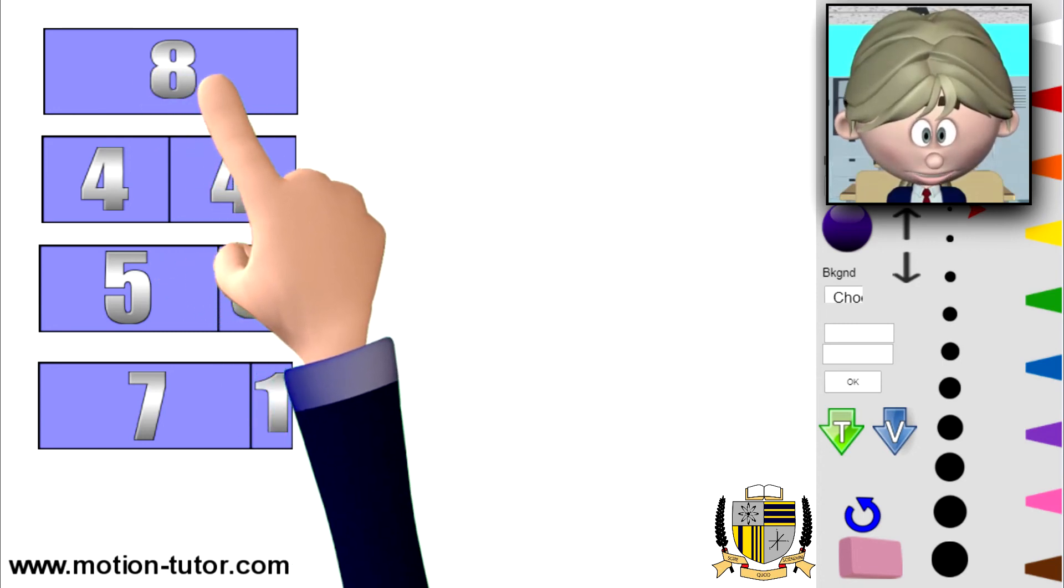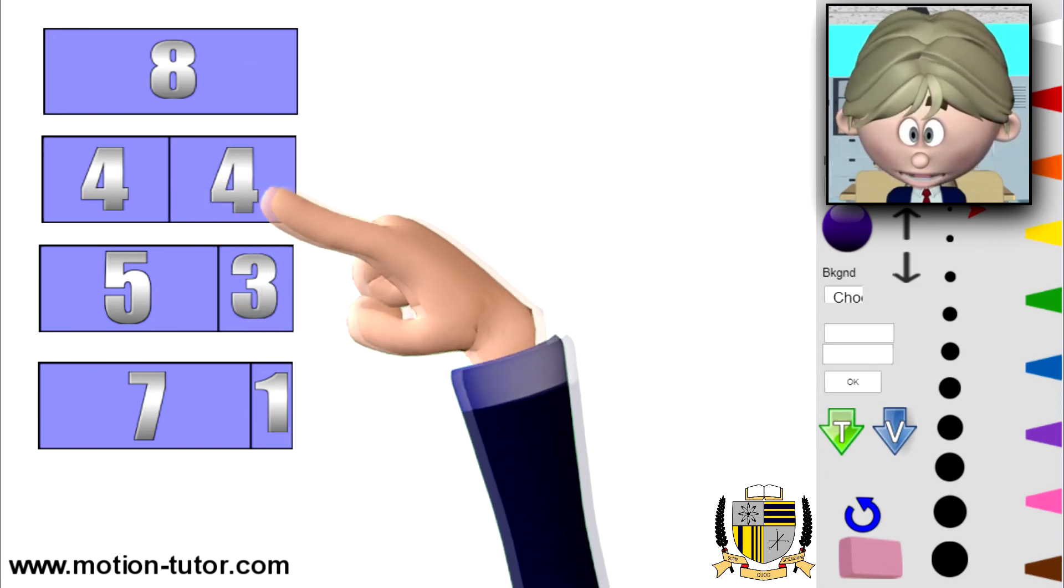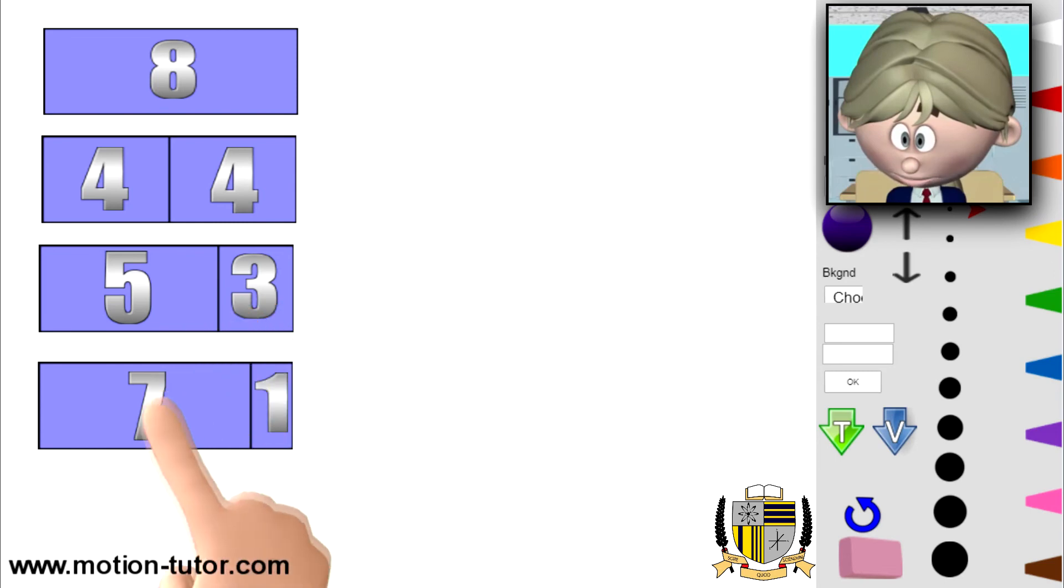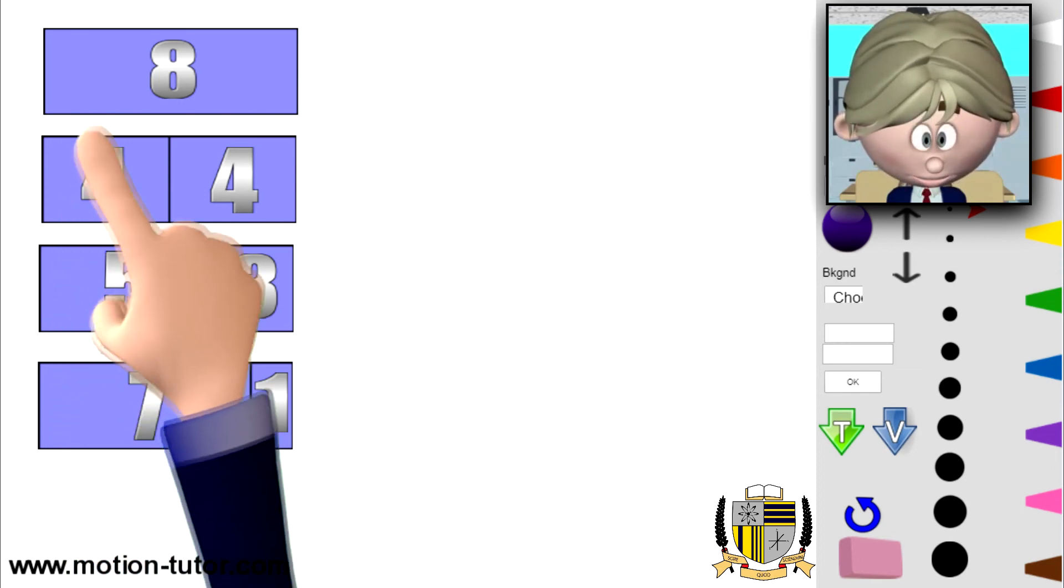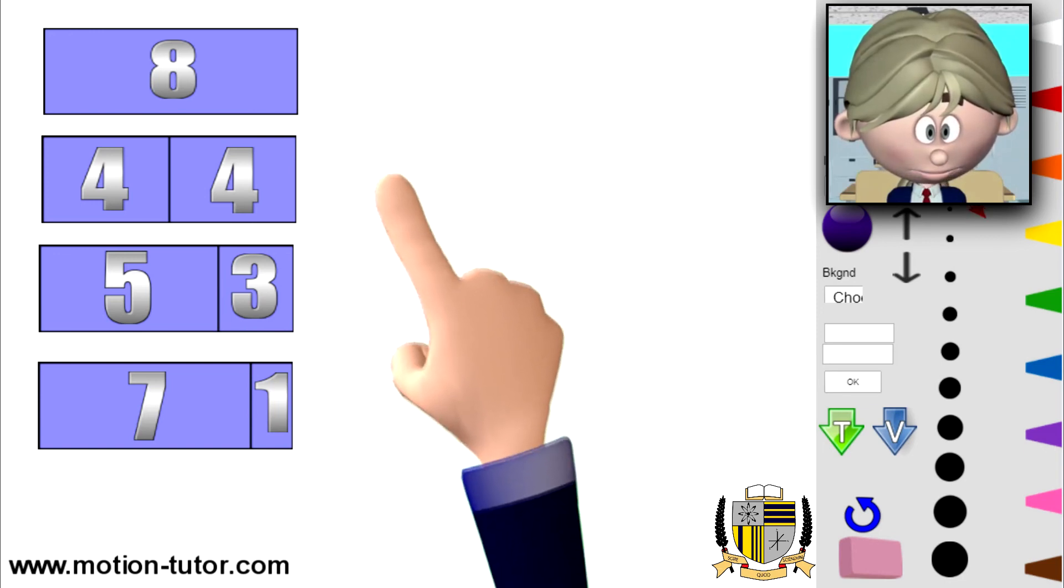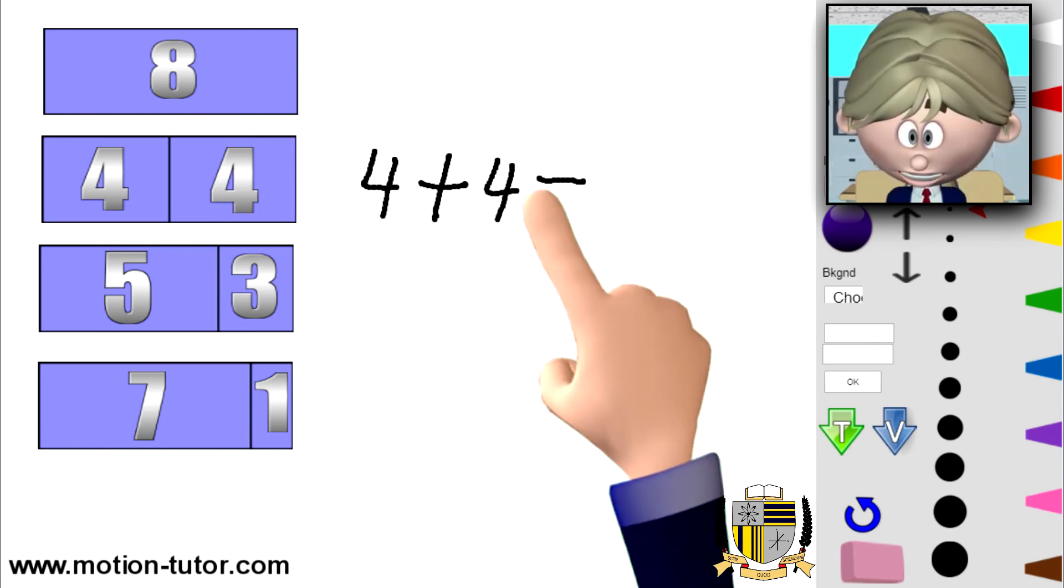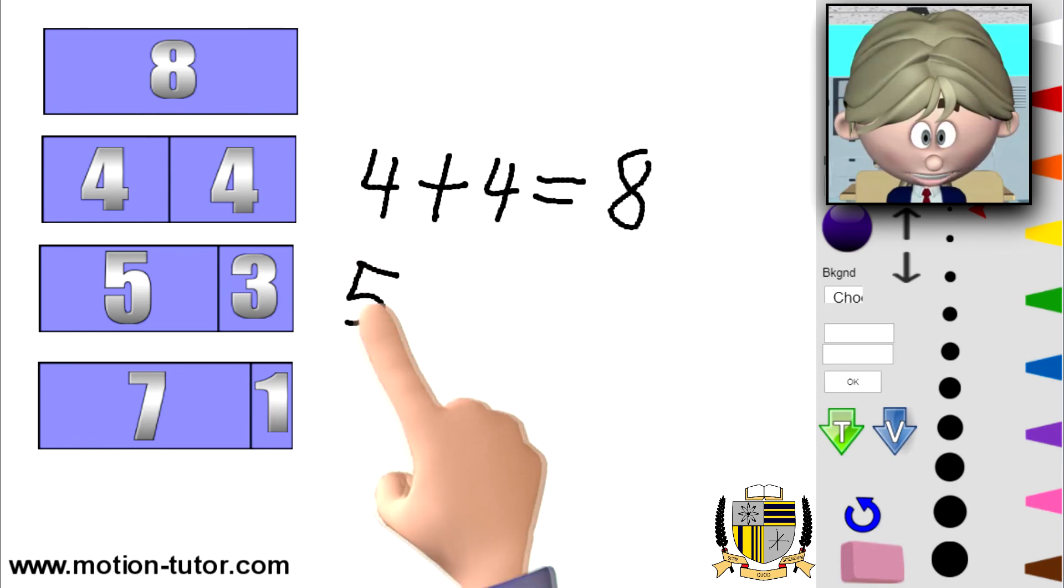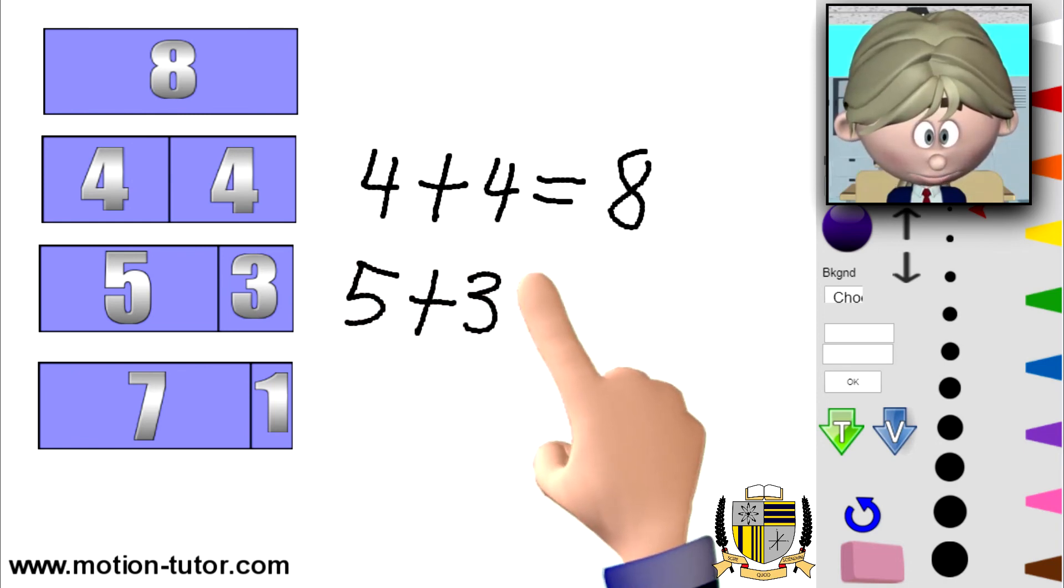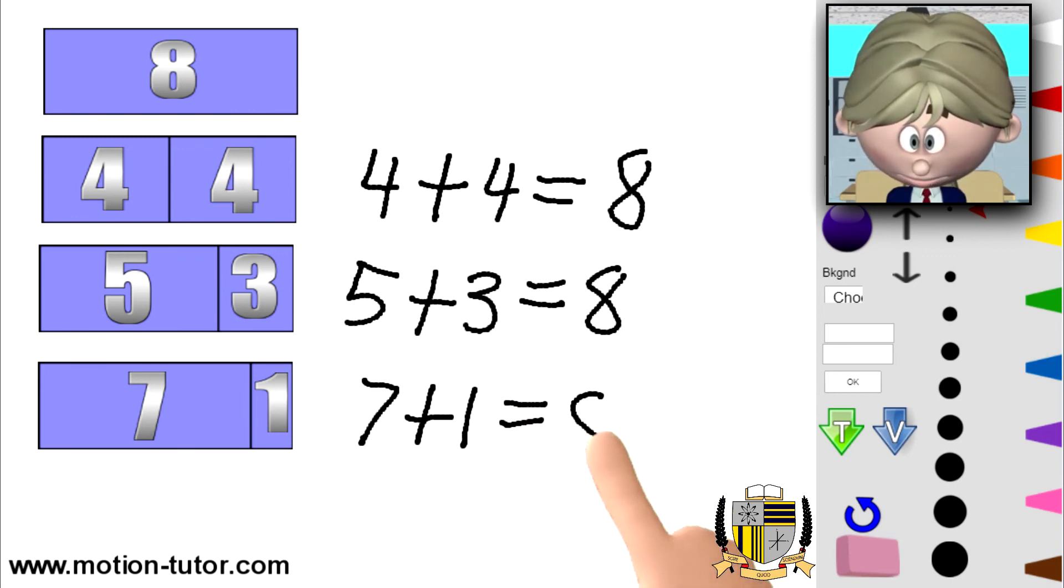So this eight can be four and four, five and three, seven and one. So you can see how these bars can be used to represent numbers. Because we already know that four plus four is equal to eight. Five plus three is equal to eight. Seven plus one is also equal to eight.